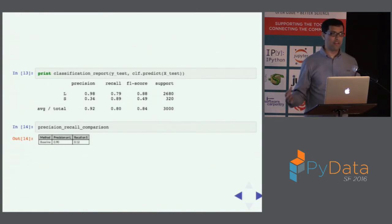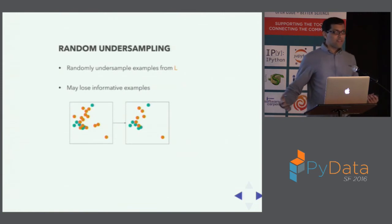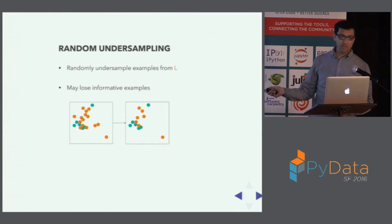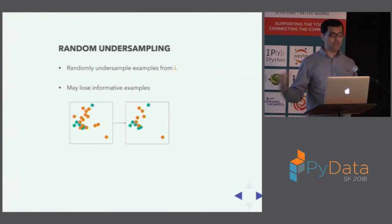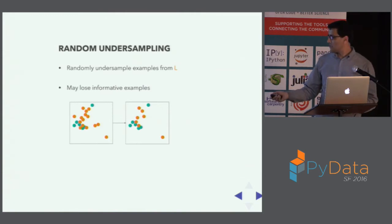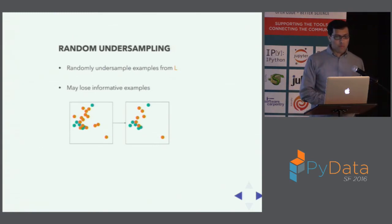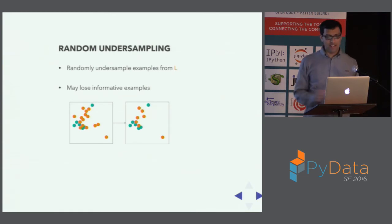The next set of techniques involves resampling the dataset, starting with undersampling the majority class. The simplest approach is random undersampling — you randomly choose to ignore some majority class points. This can cause a problem because you can lose informative examples, especially outliers. However, if every example in the majority class is surrounded by other majority class examples, it may not be such a bad approach.